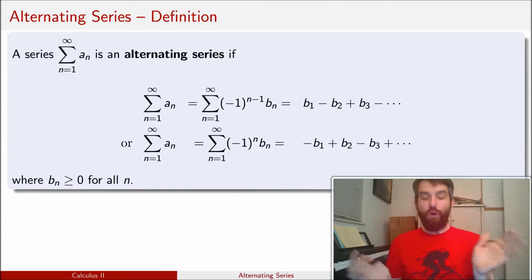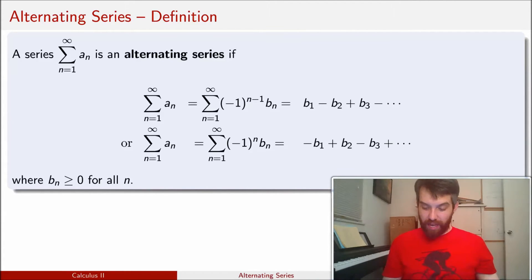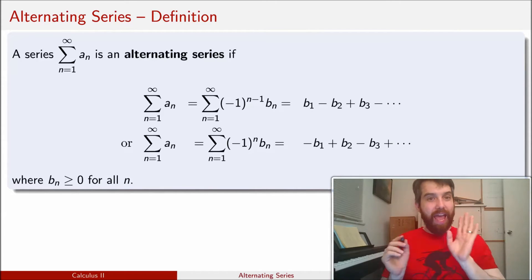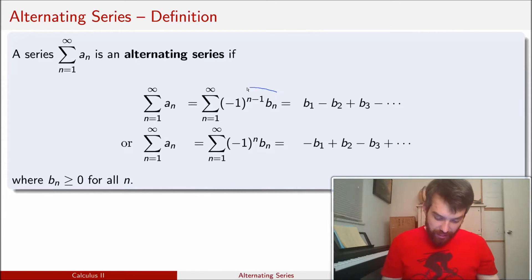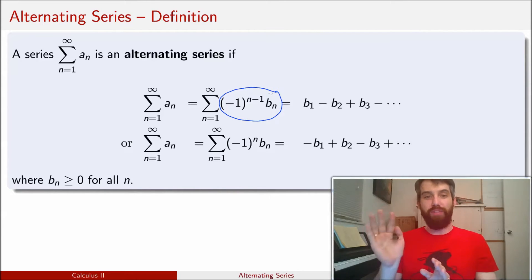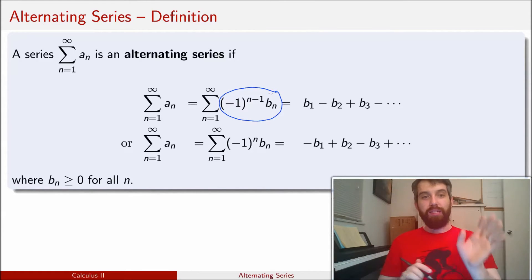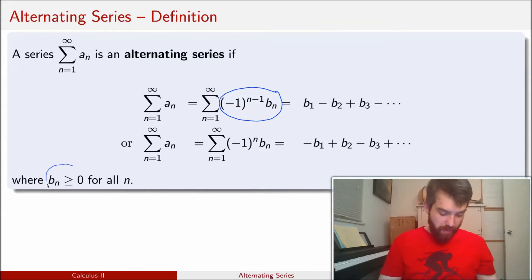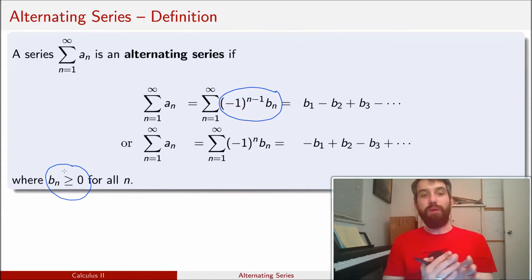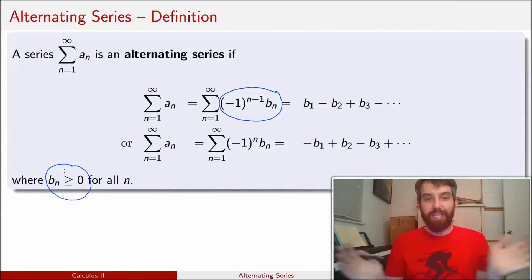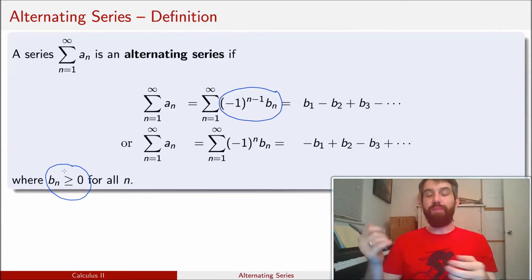We can formally write this down by imagining that our series a_n is really an alternating term: (-1) to the power of either n or n minus 1, times b_n, where the b_n's are going to be positive. Written this way, you get a positive term, then a negative term, then a positive term, then a negative term, and so on.